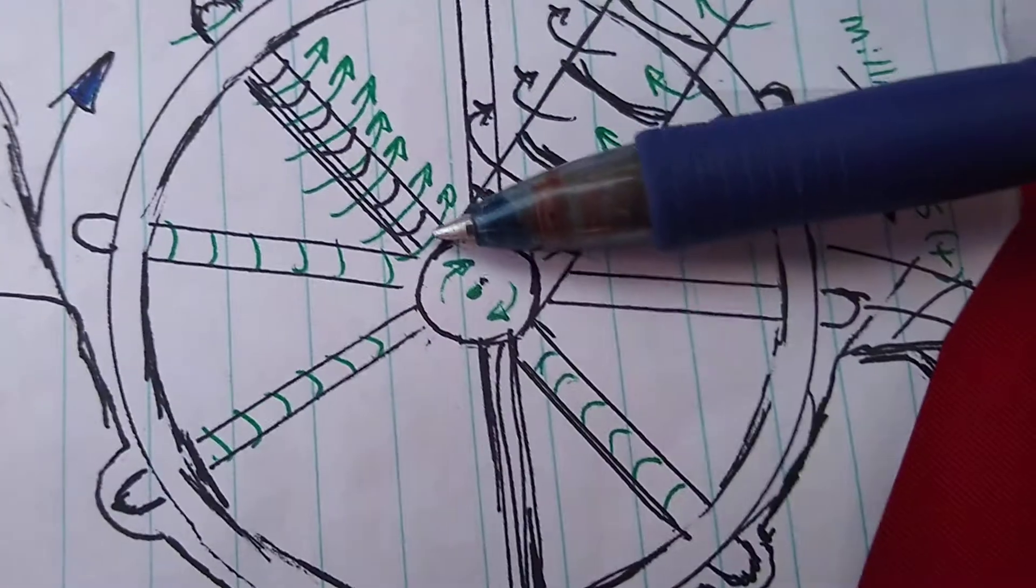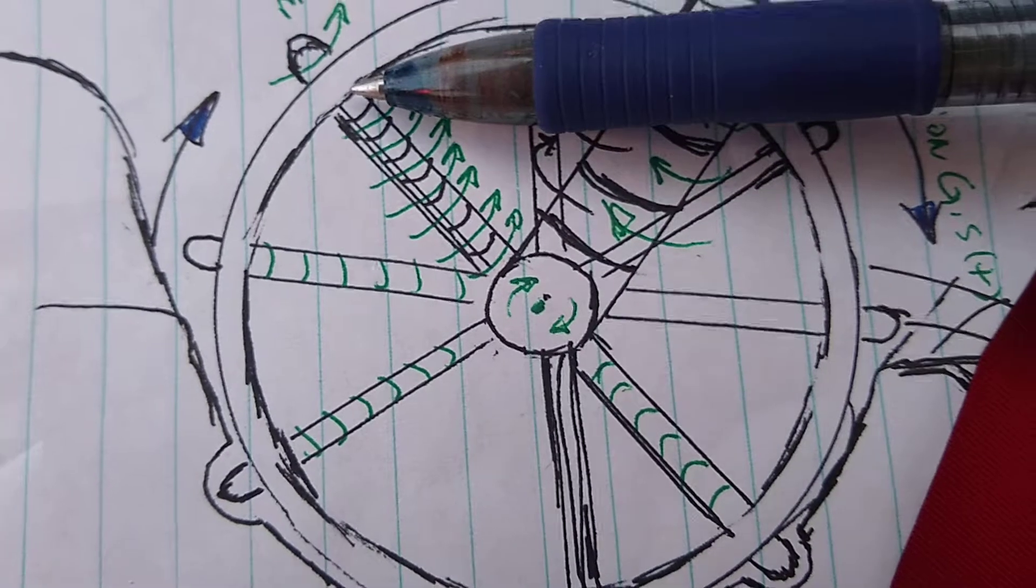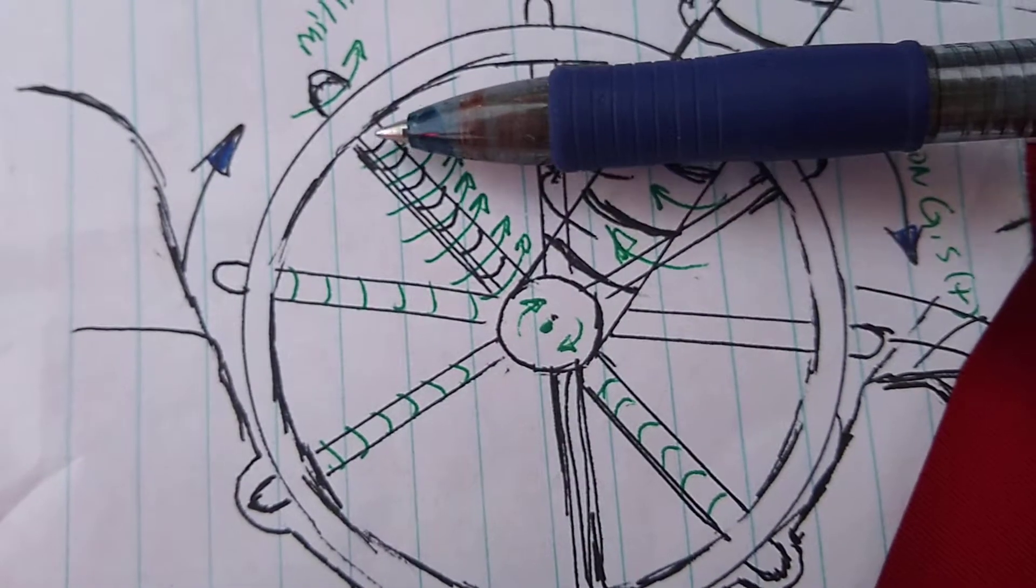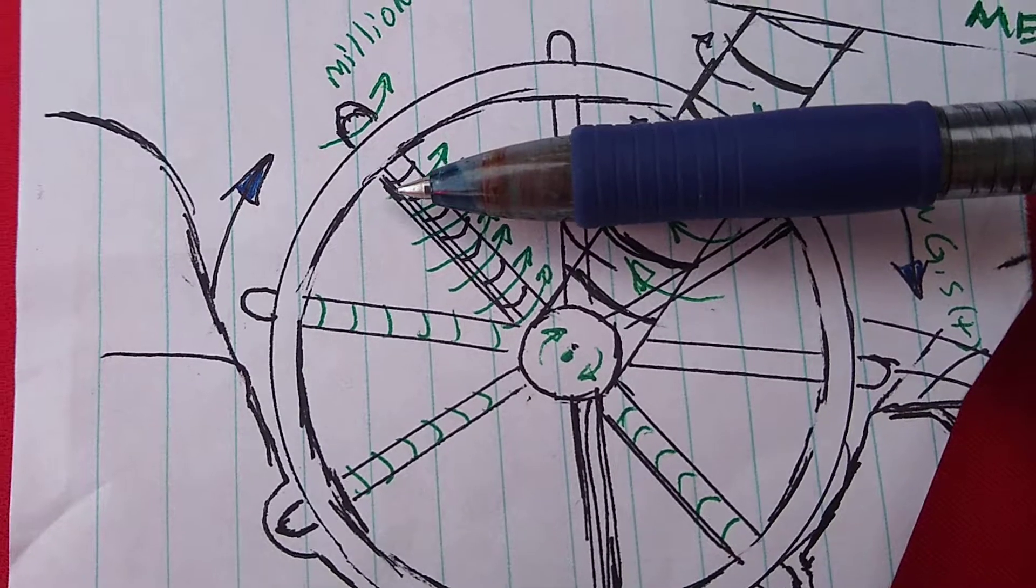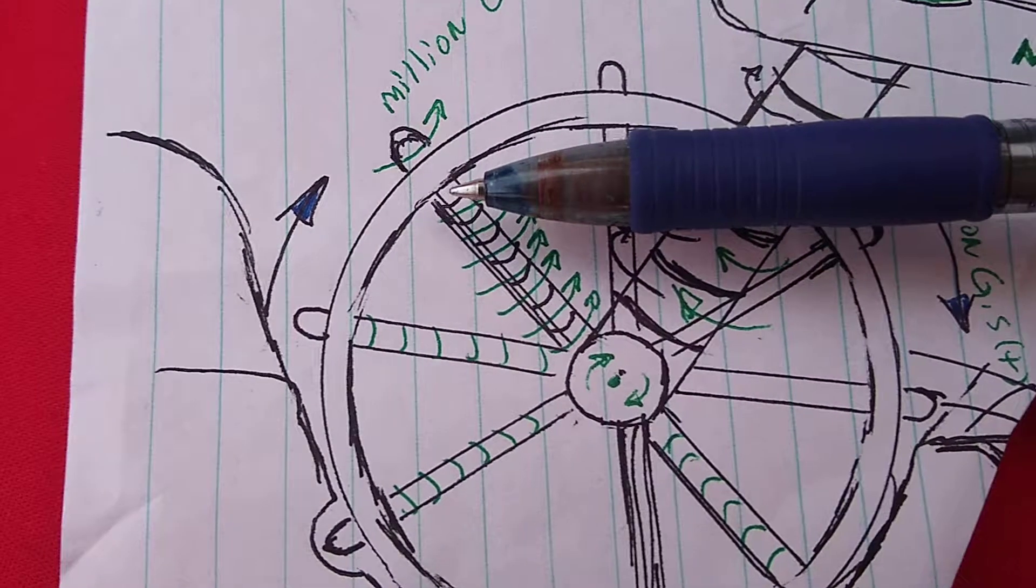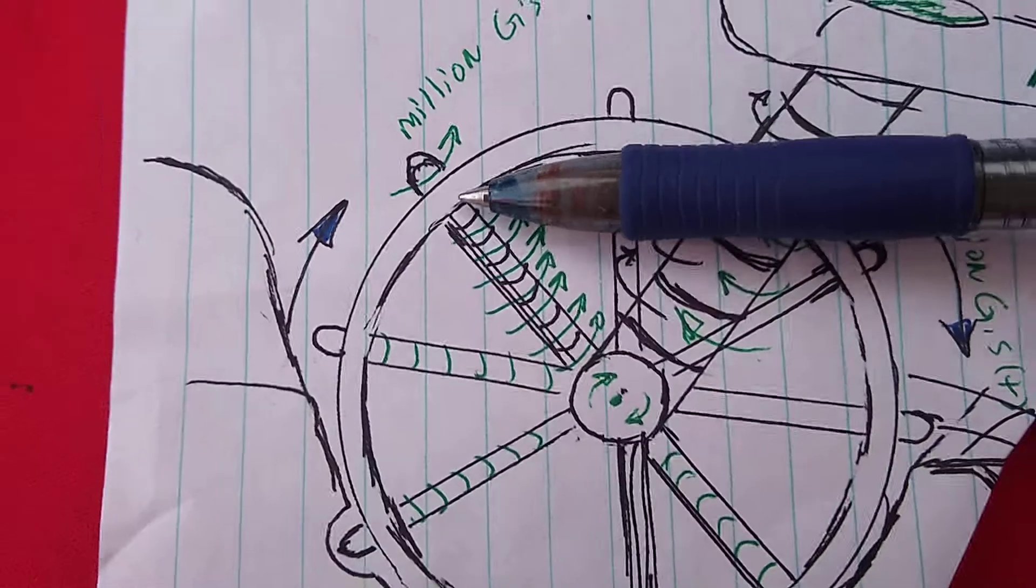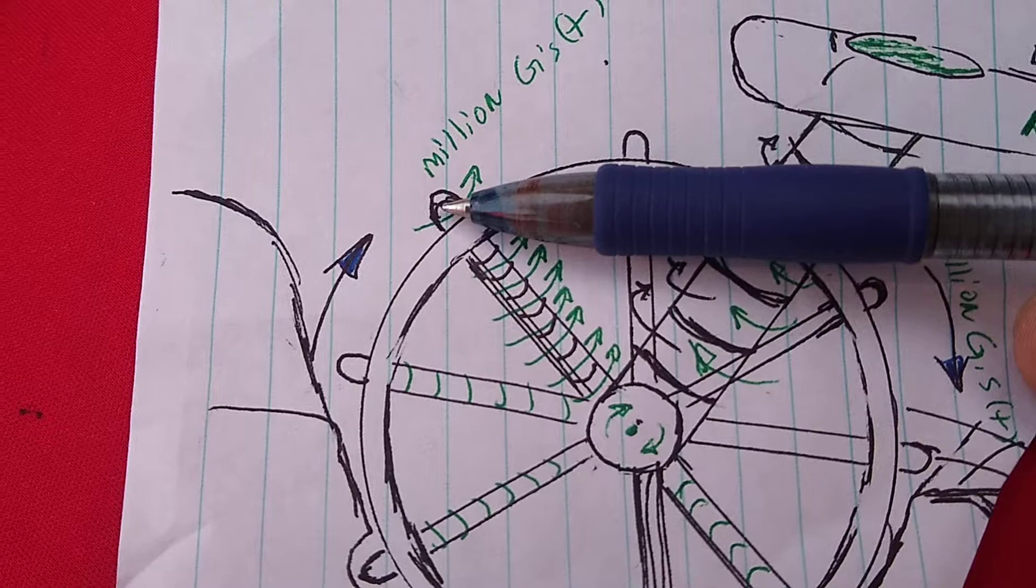These rods also spin at 200,000 G's or more. And let's say you have 10 of these for example purposes. So 200,000 G's times 10 equals, I'm sorry about that, early calculations, it's actually 2 million G's. 2 million G's times 1 pound equals 2 million pounds.